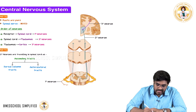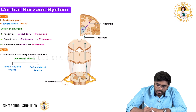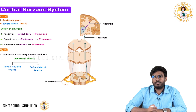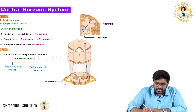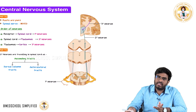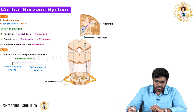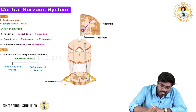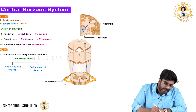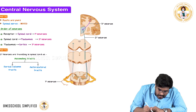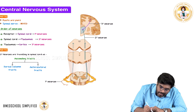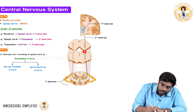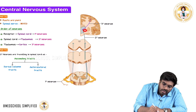From the dorsal horn, the second-order neuron starts within the spinal cord and crosses to the opposite side. The second-order neuron axon travels in the lateral column — it can also travel in the anterior column. This second-order neuron ascends through the medulla, pons, and midbrain, taking information to the thalamus, where it terminates.